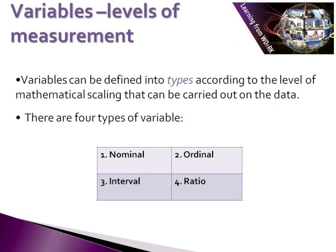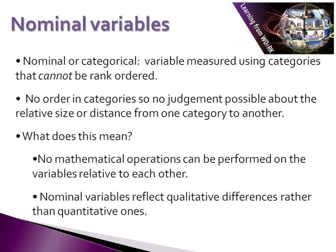In addition to knowing whether variables are independent or dependent, a further important issue in thinking about quantitative data is about the type of variable. There are four types of variable, based on the level of mathematical precision with which the values of a variable can be expressed: nominal, ordinal, interval, and ratio. A nominal or categorical variable uses categories that cannot be ranked in order — each category is just different. No judgement can be made about the relative size or difference from one category to another. With this kind of data, there are no mathematical operations we can perform relative to each other, so nominal variables reflect qualitative differences rather than quantitative ones.